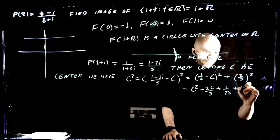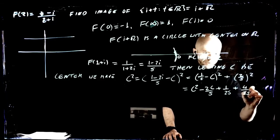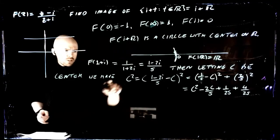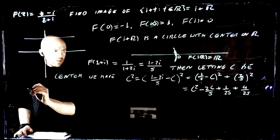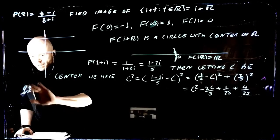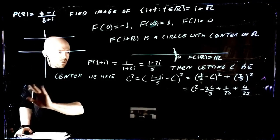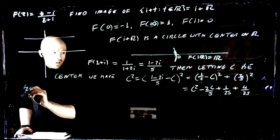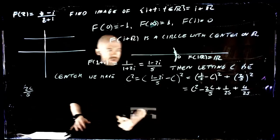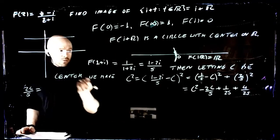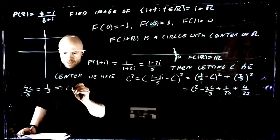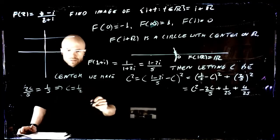This thing is going to be 4 over 25. The C squared terms cancel, so that's going to give us 2C over 5, putting this guy on the other side, is equal to 5 over 25 which is 1 over 5, which implies that C is equal to 1 over 2.